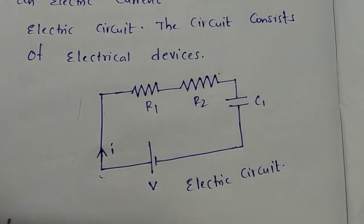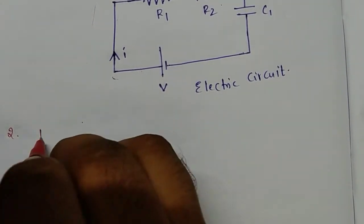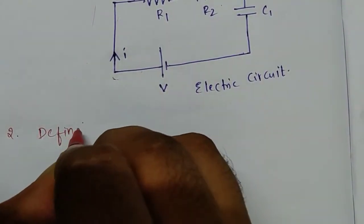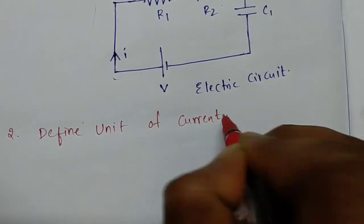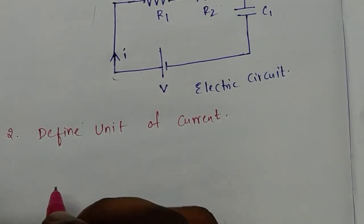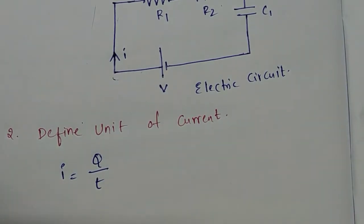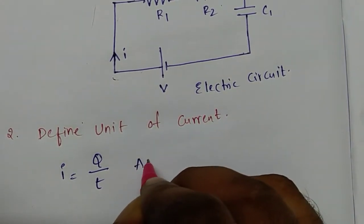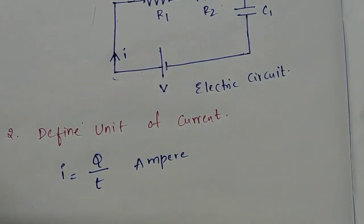Second question: define the unit of current. What is the unit of current? Current is equal to charge per unit time — the rate of flow of charge we can call current. The SI unit of current is ampere.